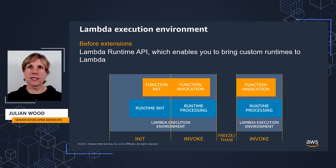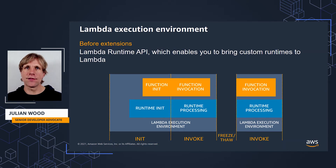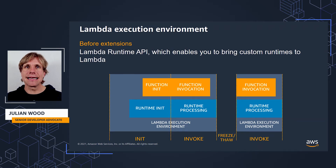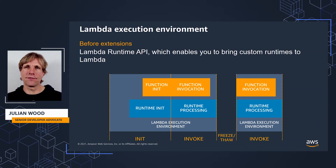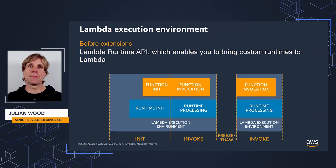When the invocation finishes, Lambda freezes the execution environment so you don't pay for idle. When the next invoke comes in, Lambda unfreezes and reuses the execution environment for a warm start and the Runtime and function do their work. When there are no pending invocations or Lambda refreshes the environment, Lambda removes the execution environment.